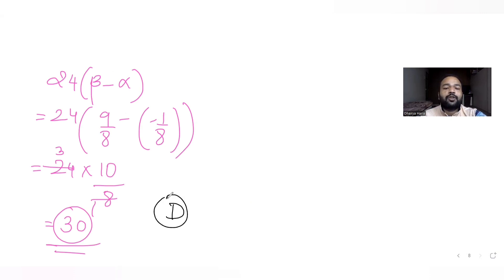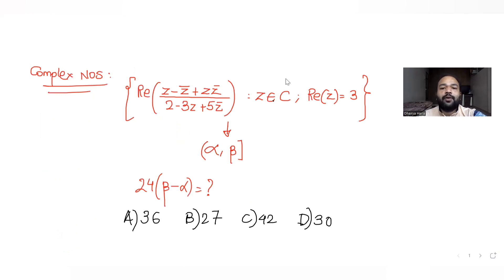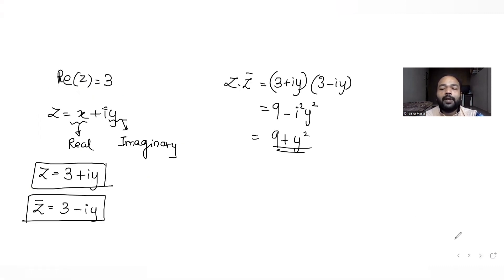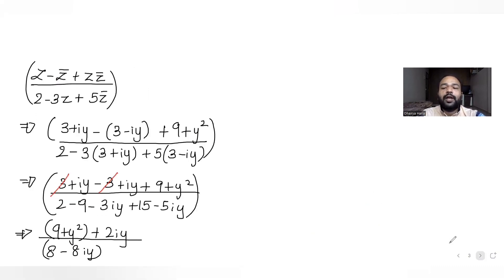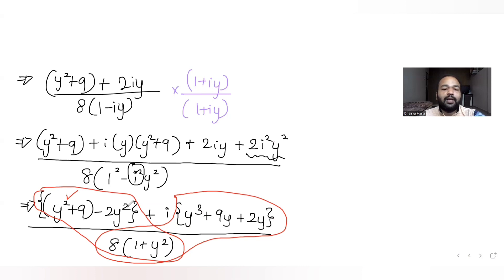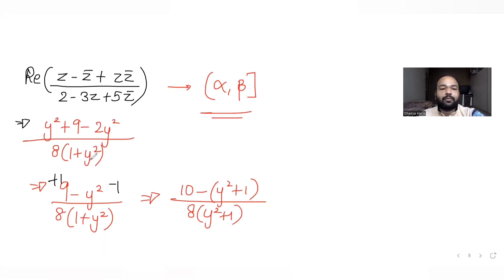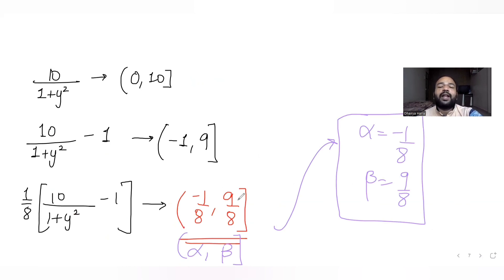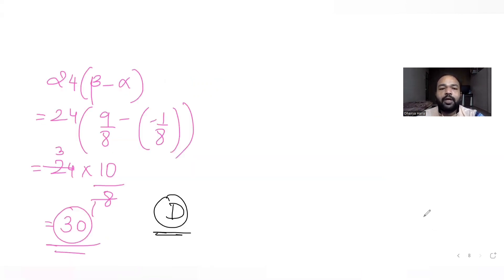So the correct answer for the question is option B. Now, 24 times (beta minus alpha) equals 24 times (9/8 minus (minus 1/8)) equals 24 times (10/8) equals 30. So 30 is the correct answer. To recap: we put the real part of z as 3, simplified the expression to get the real part, converted it into the form 10/(1 plus y²) minus 1 all over 8, found the range as (minus 1/8, 9/8], giving alpha and beta, then computed the final answer.